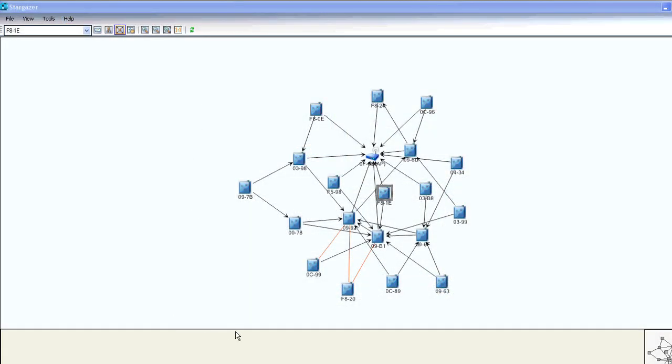For the examples in this video, we will consider the configuration choices for a 20-mote network that is two hops deep. By this, I mean that some of the motes can communicate directly to the manager over the air and other motes must route their data through other motes.